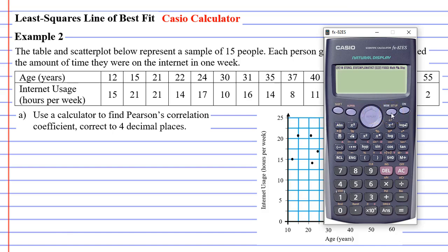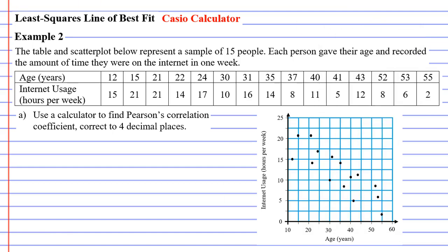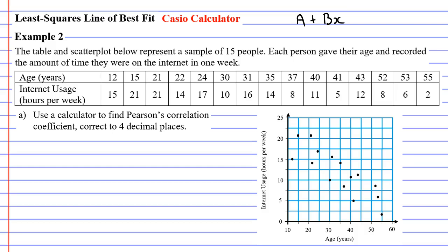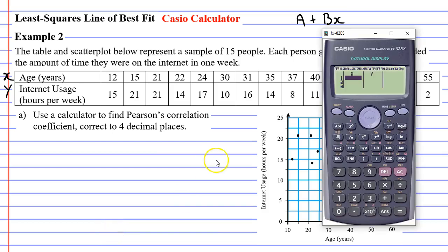Now we need to go into statistics mode, so we click mode, statistics, number 2. We want to click number 2: a plus bx. Remember this a plus bx — it's going to come into play later on. We need to enter these data values into our calculator. The first row on our table represents X and the second row is represented by Y. When we bring up our calculator we've got an X column, and we're entering all the values from the X row into the X column.